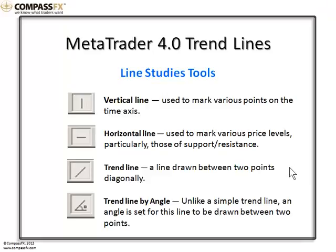Then you have the trend line itself — a simple diagonal trend line set between two points. And one other unique tool to MetaTrader 4 is the trend line by angle, which allows you to set a trend line at a specific angle.